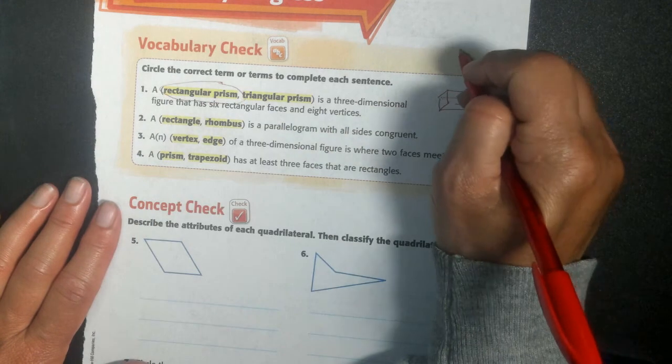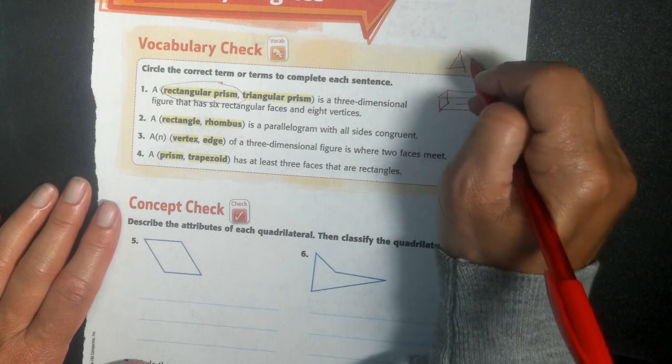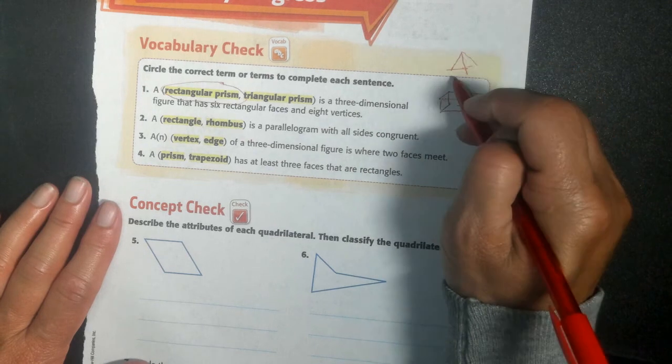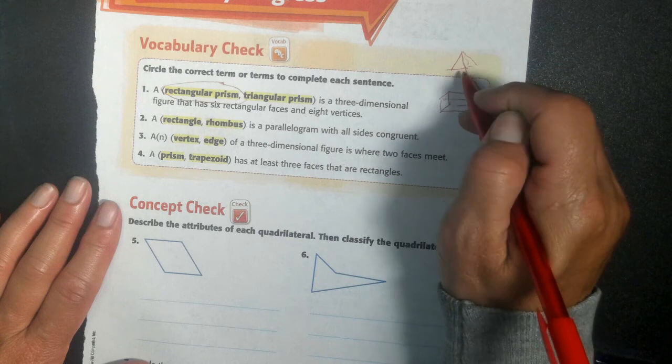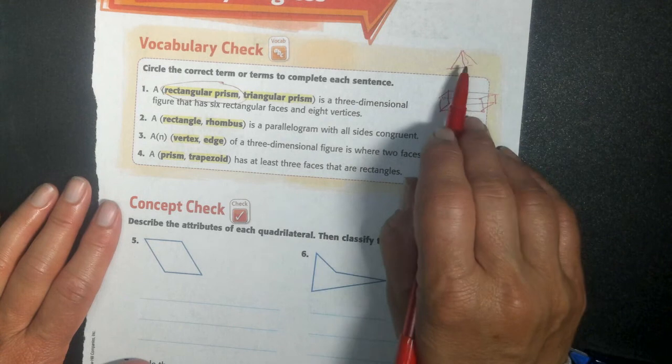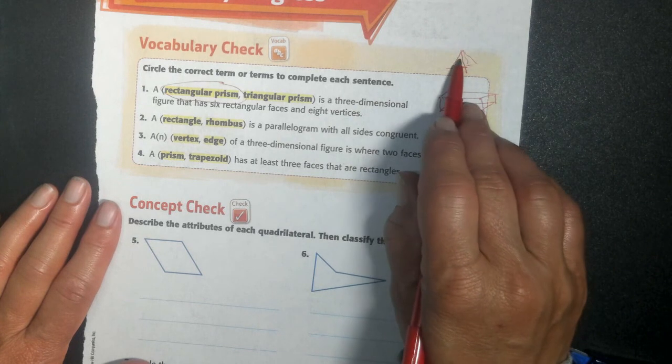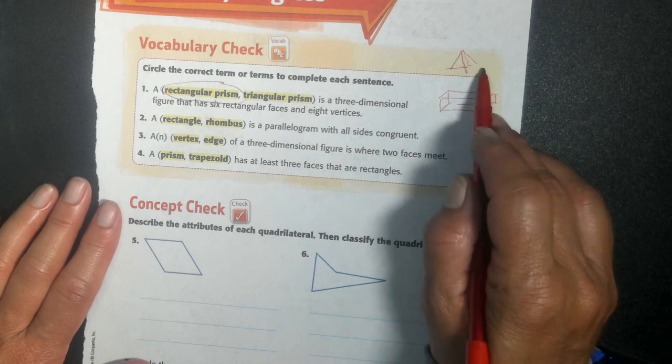If I was doing a triangular prism, I don't know how to draw a triangular prism. It's this way and I would have my base here and I'd have one, two, three, and four vertices and I'd have my faces. I'd have one, two, three, and my bottom would be four.